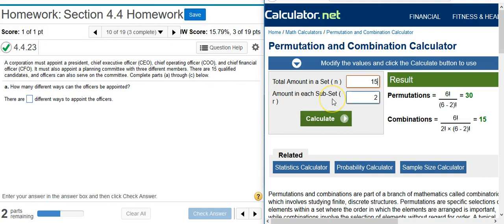And then the amount in each subset, that's how many people we have to select for. So how many positions do we have? We have a president, a CEO, COO, and CFO. So that's one, two, three, four positions. So we have four positions. I calculate that.